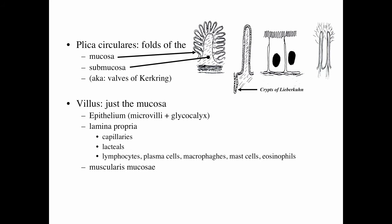The villus consists of the mucosa — the epithelium, the microvilli, and the glycocalyx — plus the lamina propria. In the lamina propria and capillaries of the small intestine you'll often find lacteals, which are specialized lymphatic capillaries that transport chylomicrons back to the liver. There are numerous lymphocytes, plasma cells, macrophages, mast cells, and eosinophils — typical connective tissue cells in the lamina propria — and the muscularis mucosae, always inner circular and always outer longitudinal.